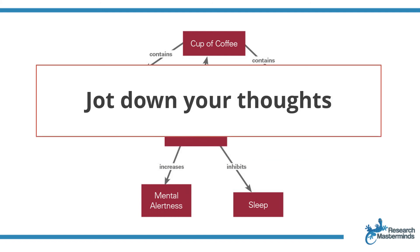Jot down all the ideas that come to mind while you answer the following questions: What is your research about? Why is your research important? What gap does your research fill? What problem will your research solve? What influences your research outcome? Just jot down all your thoughts. Then, once you have all your thoughts on paper, see if you can identify some relationships between them — what comes before what, what is the consequence of what, what is associated with what.